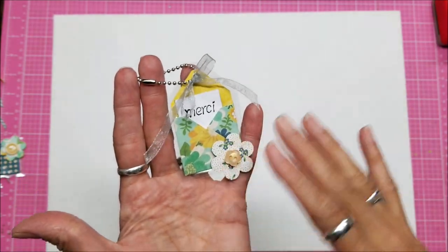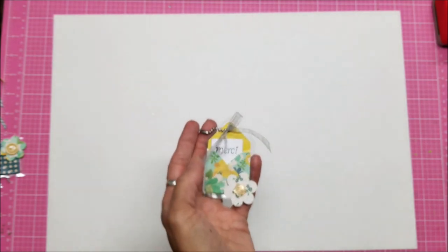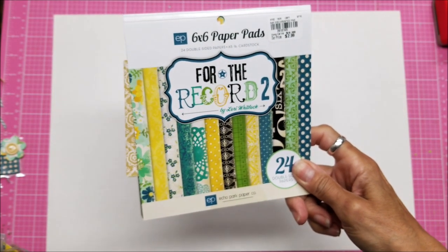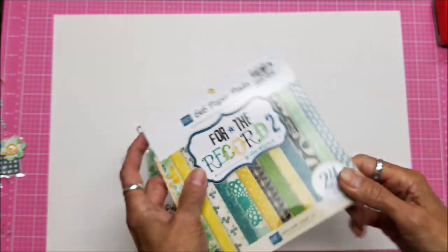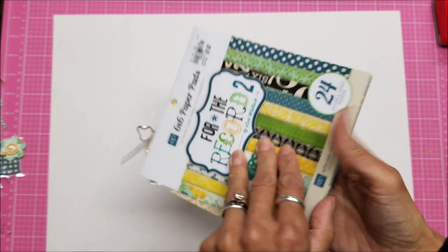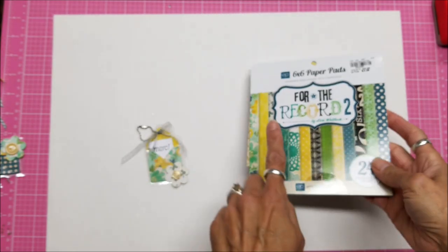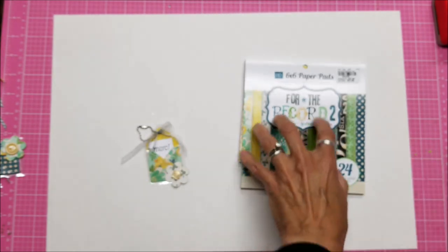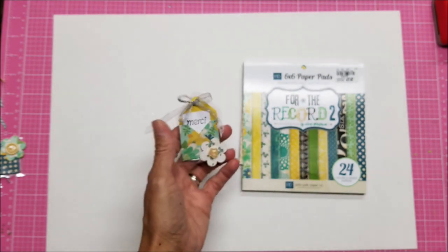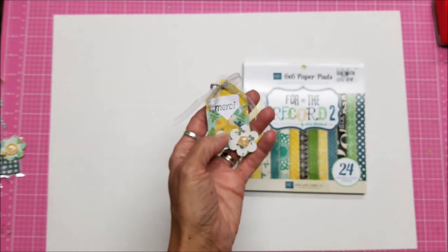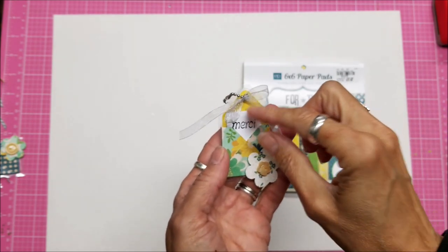So I have several in this paper collection and a lot of the paper is from Echo Park For the Record by Lori Whitlock. It's a lot easier to use six-inch paper pads for these because the designs and patterns in these pads are smaller and therefore they just work a lot better for the mini envelopes. Okay, stay tuned.